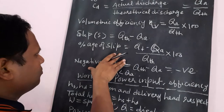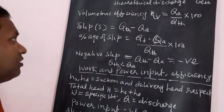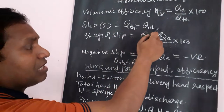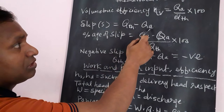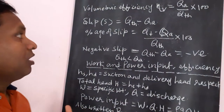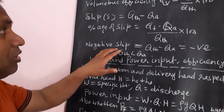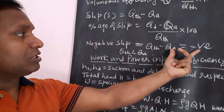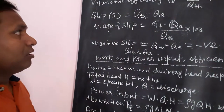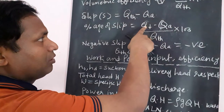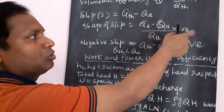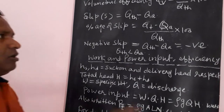Slip in a reciprocating pump is different from slip in a pulley-belt system. Slip is defined as the difference between theoretical discharge and actual discharge: slip = Q_theoretical − Q_actual. Since theoretical discharge is generally greater than actual discharge, slip is positive and is called positive slip. The percentage of slip is calculated as: (Q_theoretical − Q_actual) / Q_theoretical × 100.